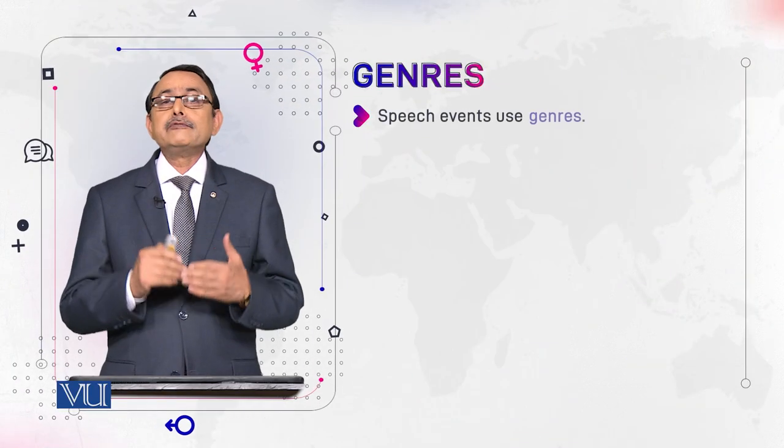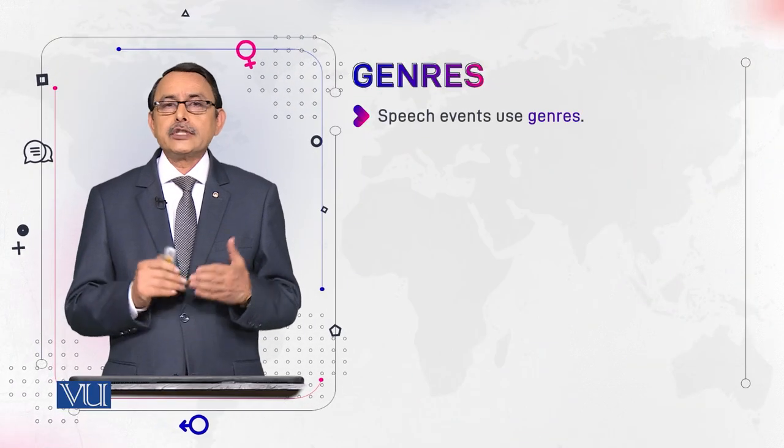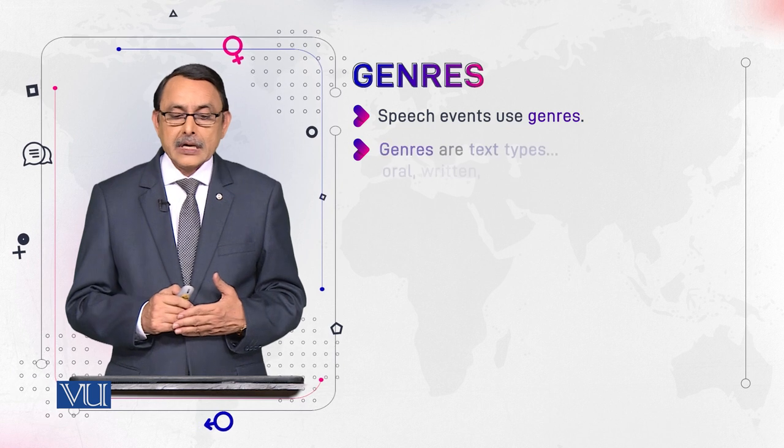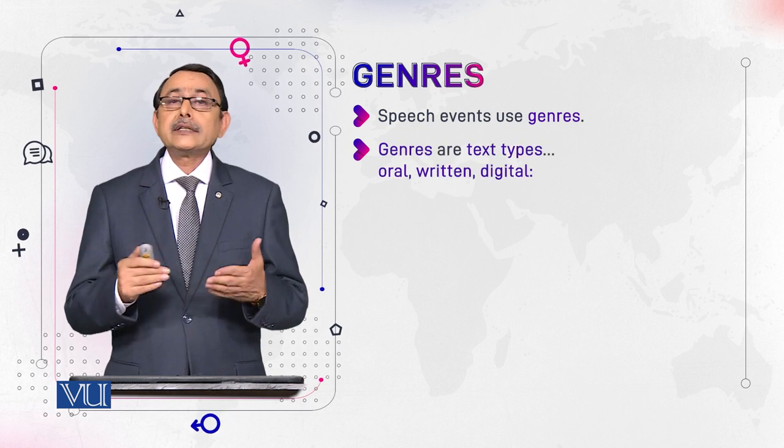This topic is related with our previous module on frames. In frames, we said that speech events have a structure, a sequence. If we add something more to that sequence, it would become Genre. Speech events use Genres, and Genres are text types.